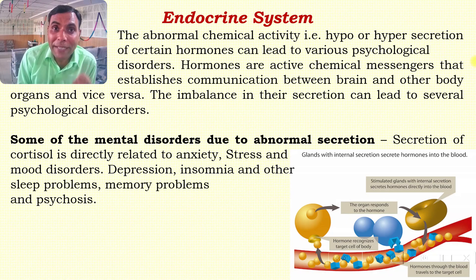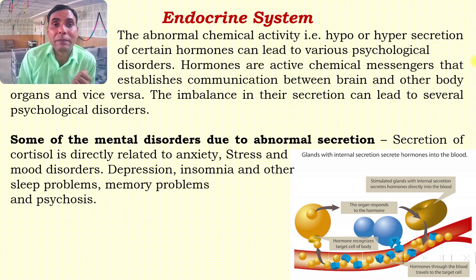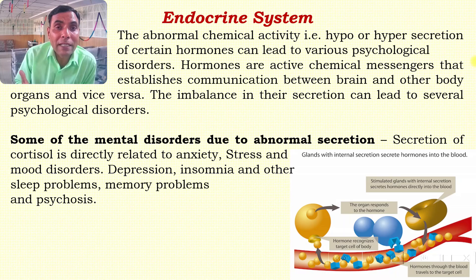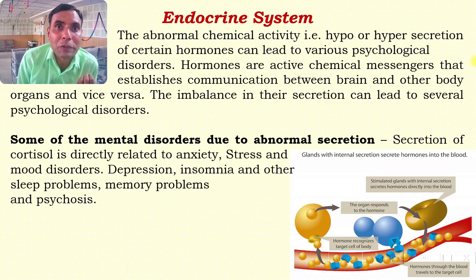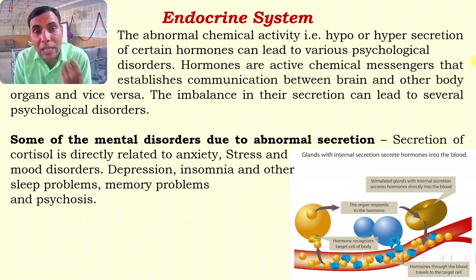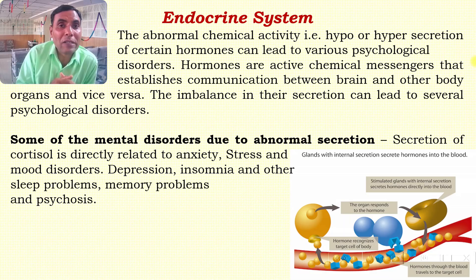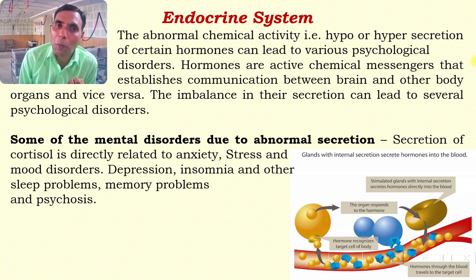For example, the secretion of cortisol is directly related to stress and anxiety. Apart from that, depression, insomnia and other sleep-related problems, memory problems, and psychosis are found to have a direct correlation with the endocrine system — that is, with the hyper- or hyposecretion of hormones.